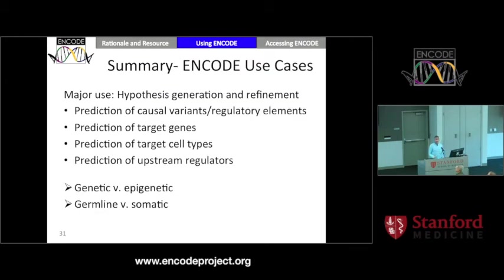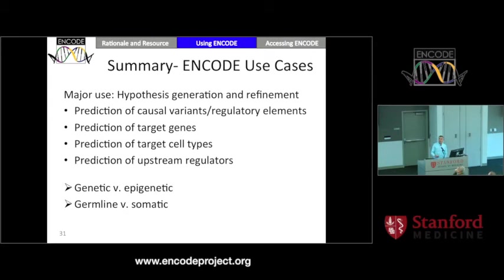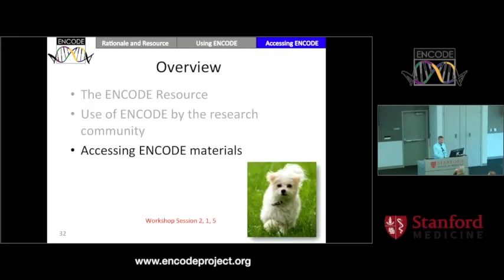In summary, the main thing that ENCODE can help with is hypothesis generation and refinement — predicting causal variants, predicting target genes, predicting cell types, and predicting upstream regulators. All of the examples I've shown are examples of how you could use this with genetic results. If you had epigenetic results or an epigenetic cohort, you could do many of the same things with ENCODE data. I've shown germline examples, but one could do all of this with somatic variants — though additional caveats apply in that case.